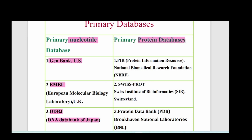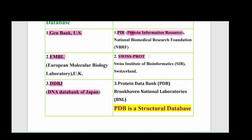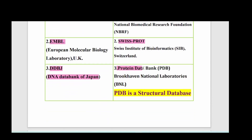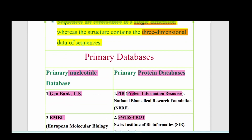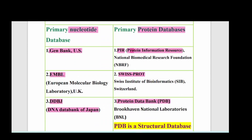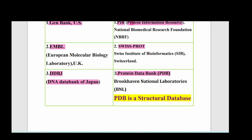Primary protein databases include PIR — Protein Information Resource, maintained by the National Biomedical Research Foundation; SwissProt — Swiss Institute of Bioinformatics, which is a primary protein sequence database; and PDB — Protein Data Bank, which is a structural database containing 3D structural information.